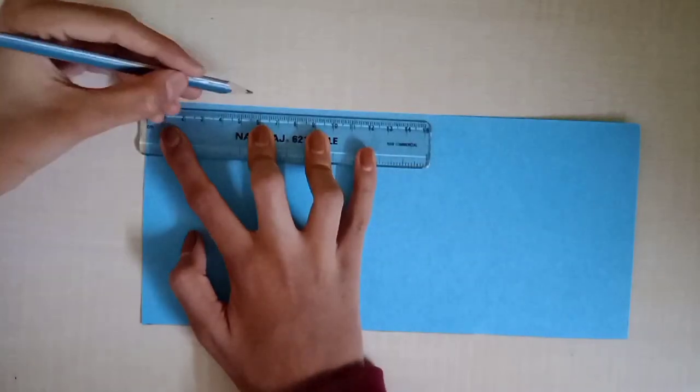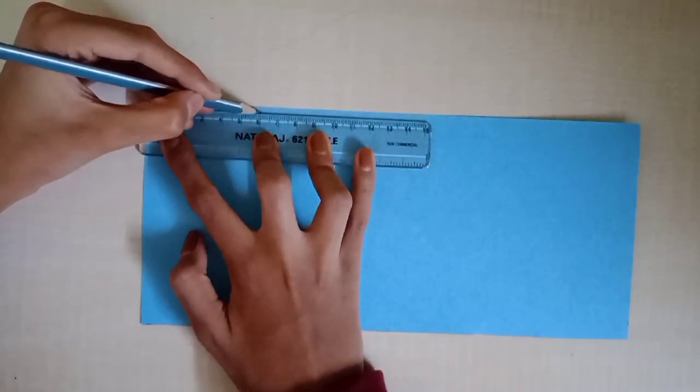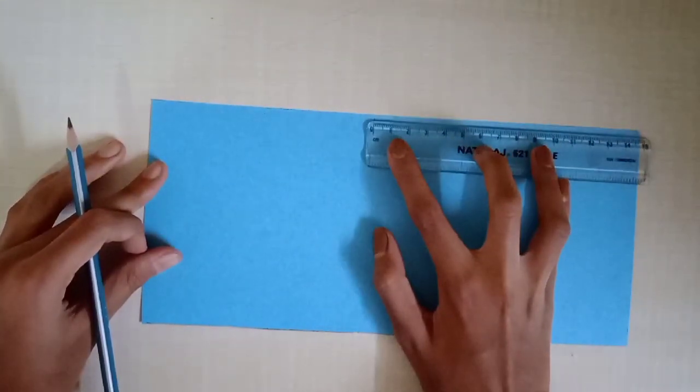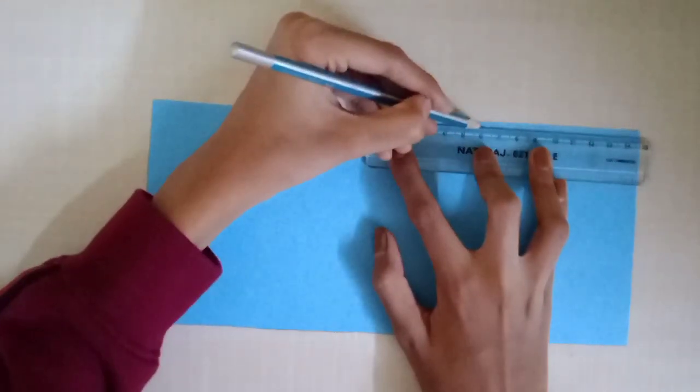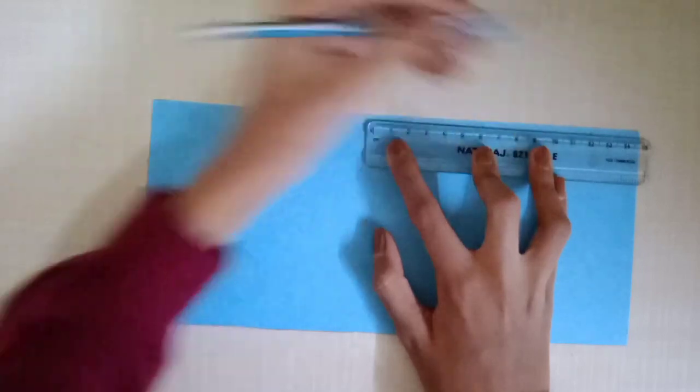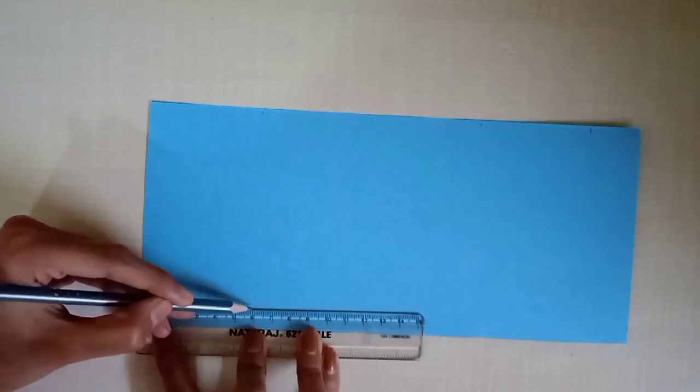Now you have to mark 6 cm on the paper. So you'll have 4 partitions having 6 cm marked and the last 5th partition is going to be 3 cm. You have to repeat the same thing on the opposite side. Make sure they're symmetrical.